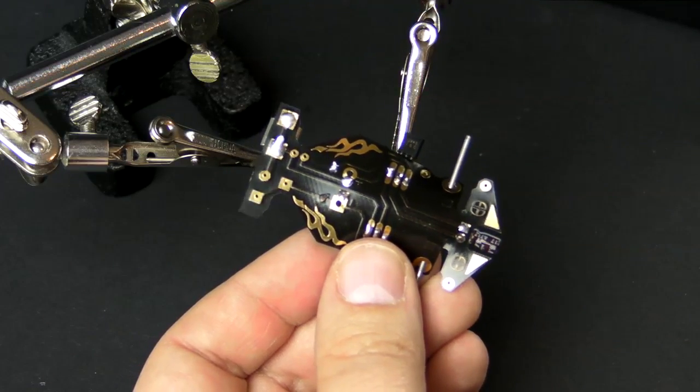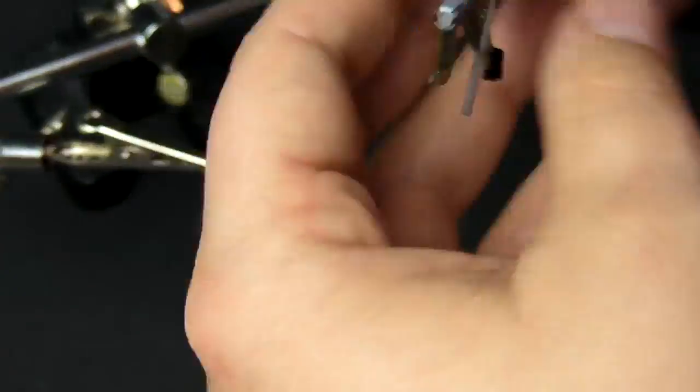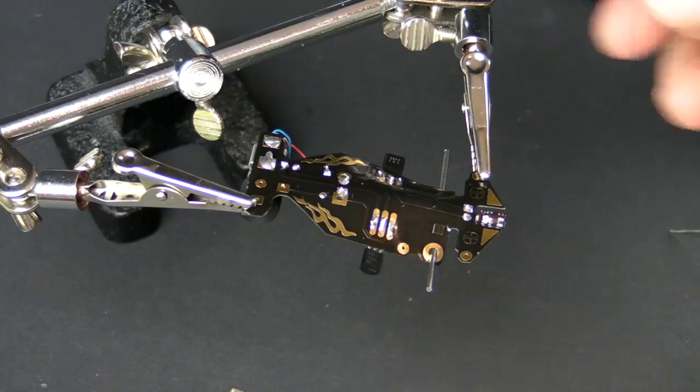Now we're going to mount and solder the motor. Next, let's add the front wheels.